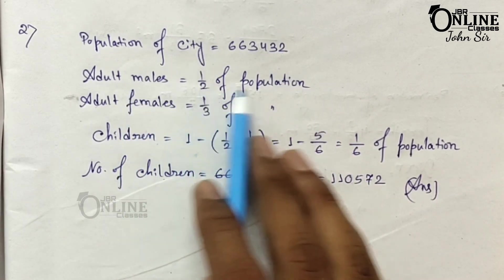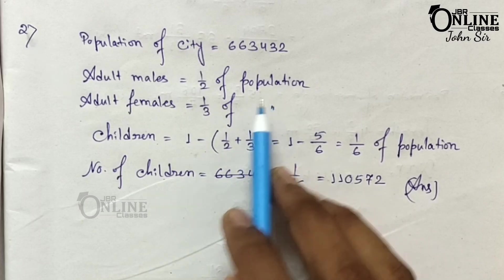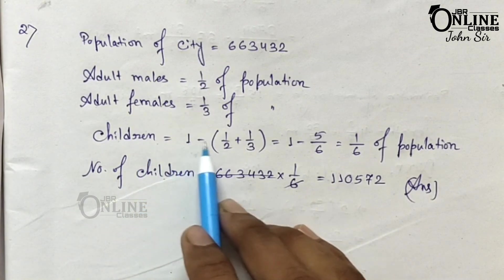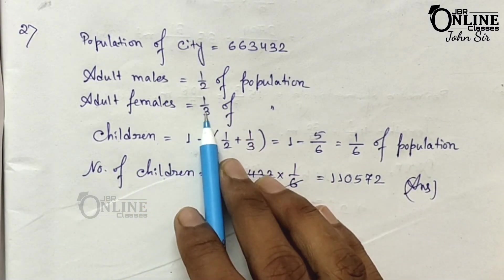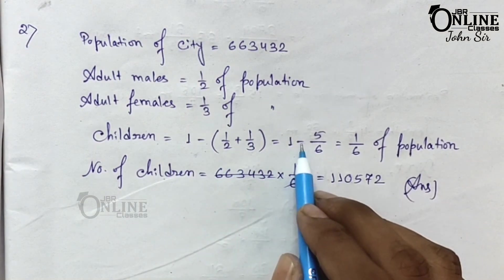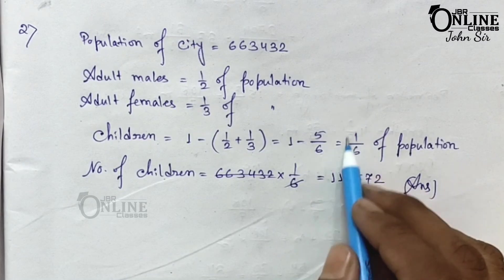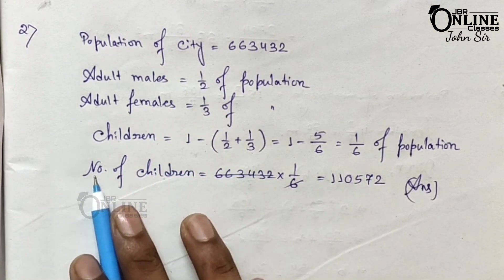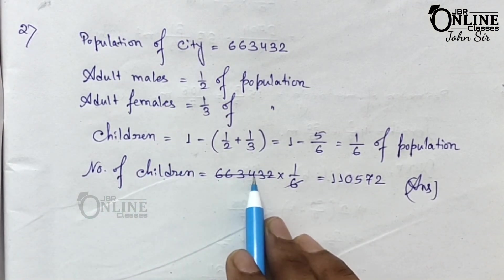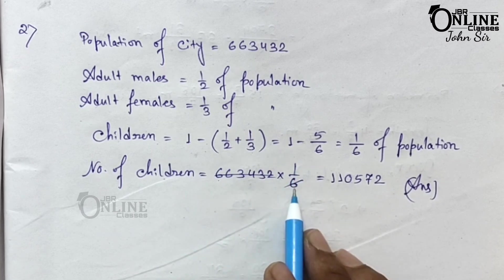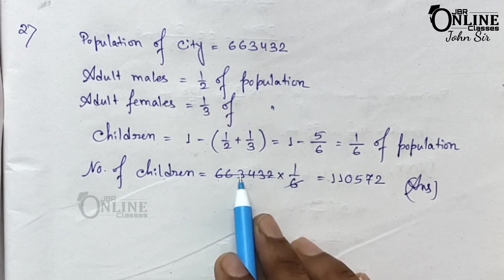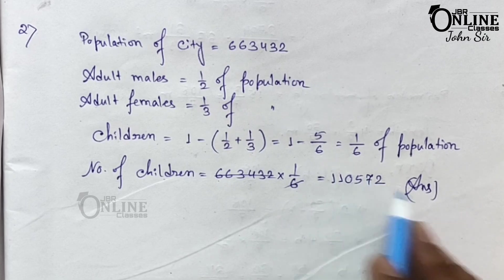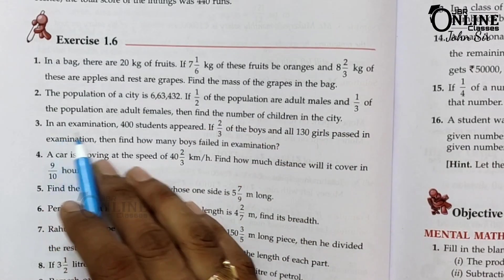Half of the population are adult males and 1/3 are adult females. The children's fraction will be 1 minus (1/2 plus 1/3), which equals 1 minus 5/6, giving 1/6. So number of children equals 663,432 multiplied by 1/6. After cancellation, you get 110,572. So 110,572 is the answer.